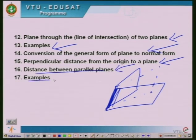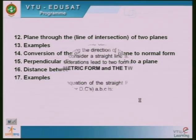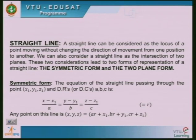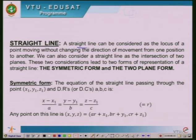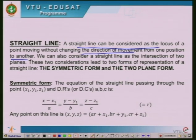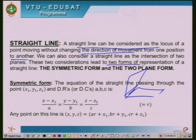Our topic of discussion today will be what are known as straight lines. It is a simple concept — just an extension of what was done in analytical geometry in two dimensions. A straight line can be considered as the locus of a point moving without changing direction. We can also consider a straight line as the intersection of two planes, since two planes always intersect along a straight line. These two considerations lead to two forms: the symmetric form and the two-plane form.